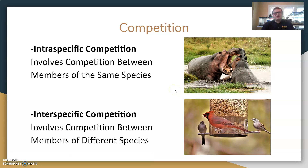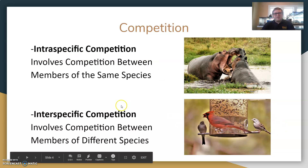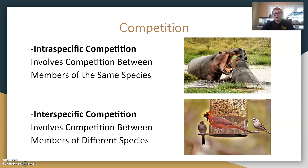When we talk about competition, there are two types. Intraspecific competition involves competition between members of the same species — you see two hippos here competing for space, that's intraspecific. Interspecific competition is competition between members of different species. Here at the bird feeder, we have house sparrows compared to a cardinal — they're going for a similar resource but have different advantages and disadvantages in being able to get those resources.